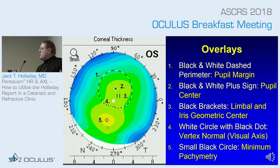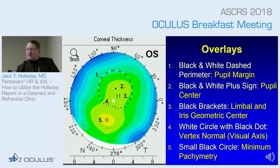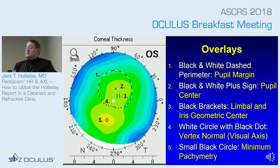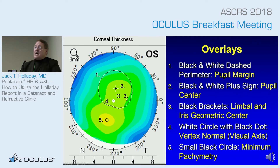There are five overlays you need to know — things that appear on top of the map. The first is the dashed line: the pupil margin, which follows the contour of the pupil perimeter. The pupils are usually miotic because the bright lights are on. The second is a little crosshair — that's the pupil center, the centroid of that perimeter. The third is the center of the iris or limbus area.